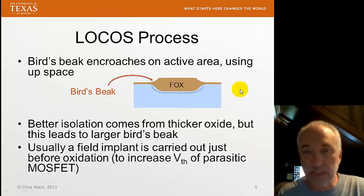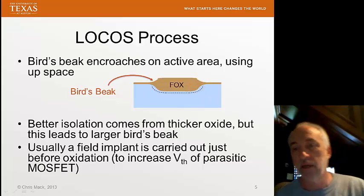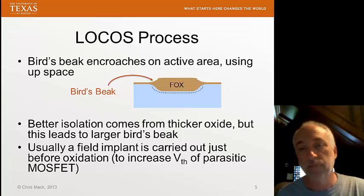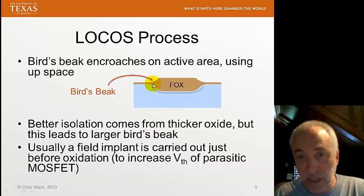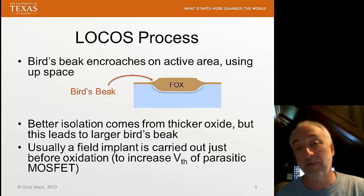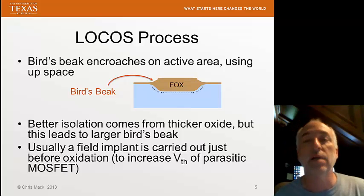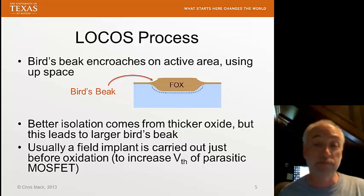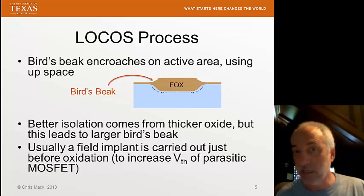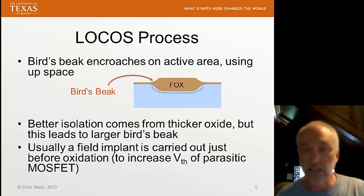We'll often also do an implant into the silicon in the opening of our silicon nitride layer just before we grow the field oxide. This creates a higher doping in this region. The purpose is to make it harder to turn on the parasitic transistor — we're adjusting the doping level to get a higher threshold turn-on voltage. Then we have the thick oxide. Both of these things combined help make the turn-on voltage large. We want V-threshold to be maybe twice the supply voltage, so it's very unlikely we'll be able to turn this transistor on, and we won't get any leakage of current between our devices.